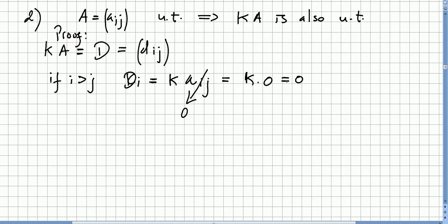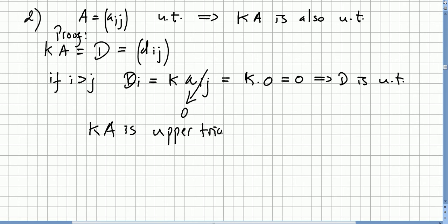k times 0 equals 0, so d_ij = 0. This means D is upper triangular. Since D = kA, we conclude that kA is upper triangular.